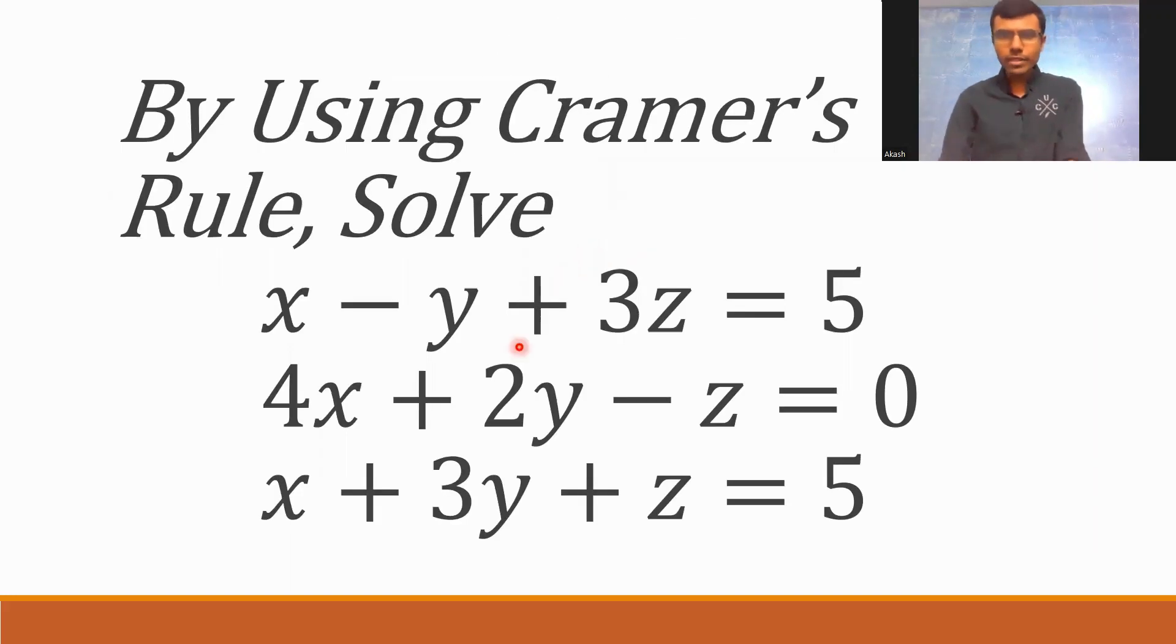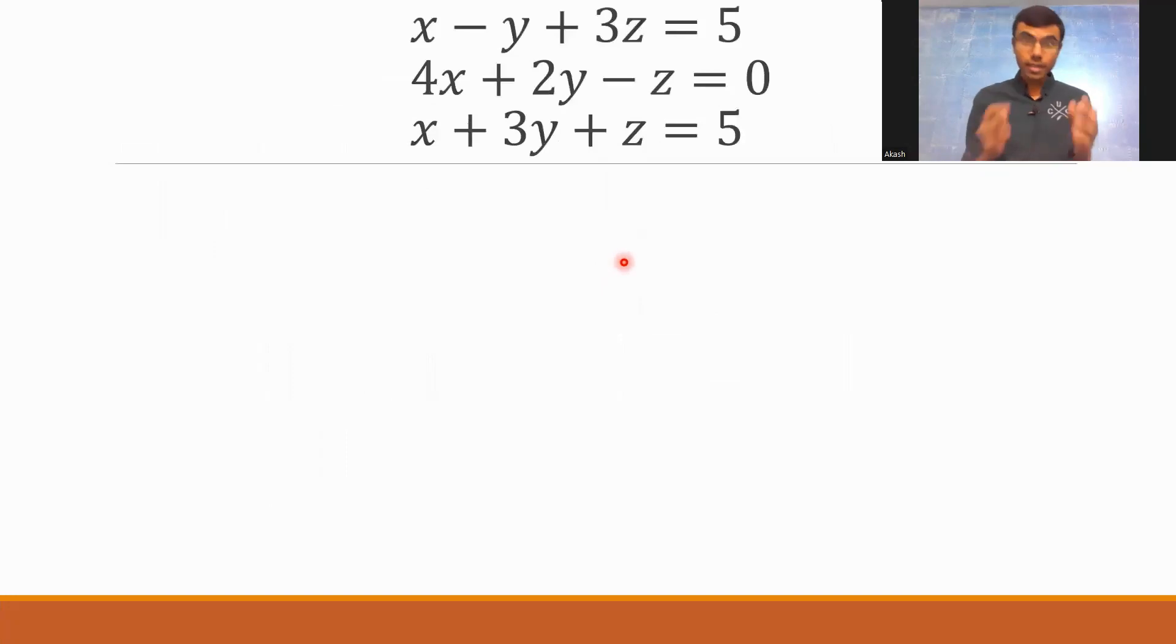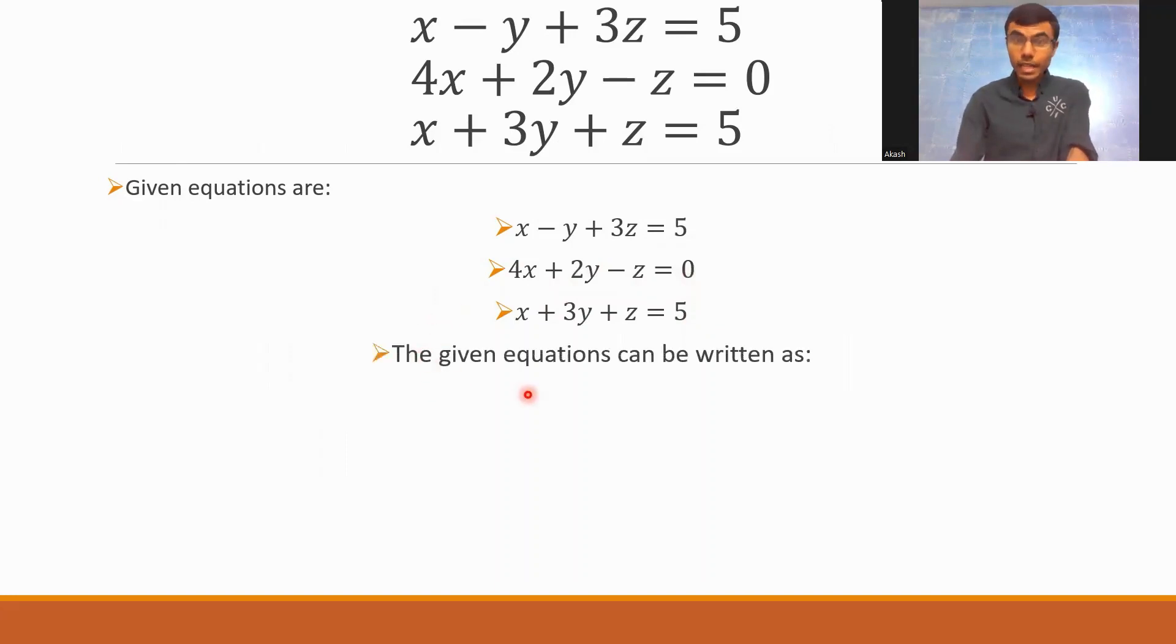So these are my given set of equations. First thing, my first target is to write them in a matrix equation. This is a general equations. Now I want to write it as a matrix equation. How would I do it? See, first write down the given equations: x minus y plus 3z equal to 5, 4x plus 2y minus z equal to 0, x plus 3y plus z equal to 5. It's clear? Now next, the given equations can be written as like this. It's very simple. What you need to do is just write down the coefficients of x, y, z.